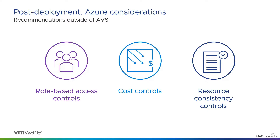Today, those portal-only features include creating placement policies, storage policies, and configuring external identity sources. Also, making changes to the DHCP and DNS services on the default tier-one gateway requires private cloud access. So if you're limiting your vSphere admins, they're not going to be able to make those changes.